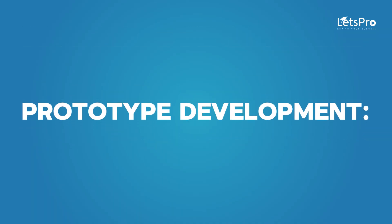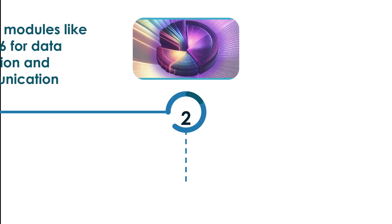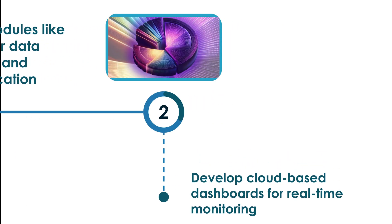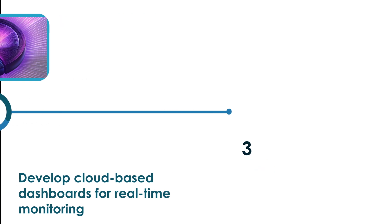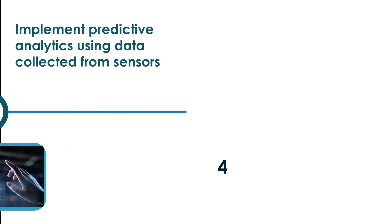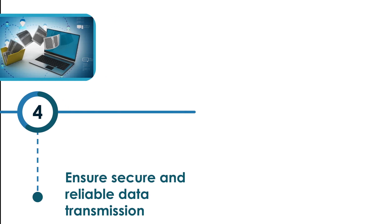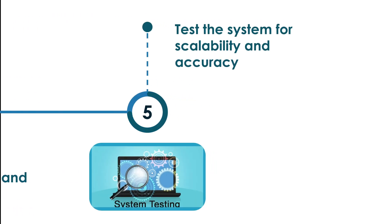Prototype Development: Use IoT modules like ESP8266 for data collection and communication. Develop cloud-based dashboards for real-time monitoring. Implement predictive analytics using data collected from sensors. Ensure secure and reliable data transmission. Test the system for scalability and accuracy.